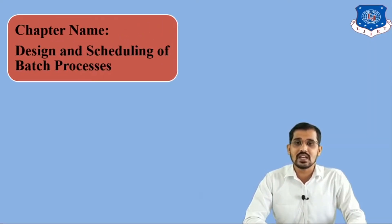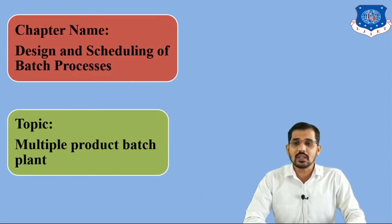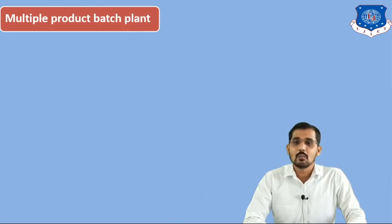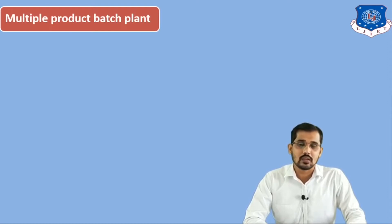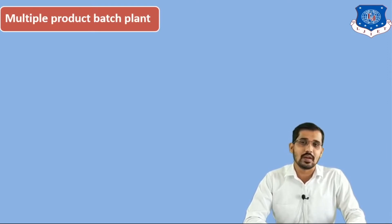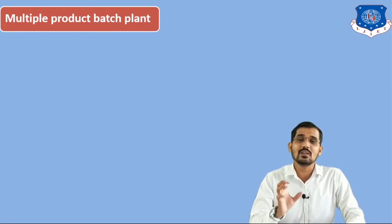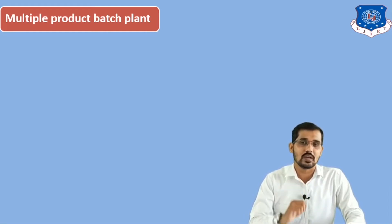The chapter name is Design and Scheduling of Batch Processes and the topic is Multiple Product Batch Plant. You can see on the screen: multiple product batch plant. In the previous lecture, I explained the single product batch plant. To understand this concept, you should know the meaning of batch plant and semi-batch plant.